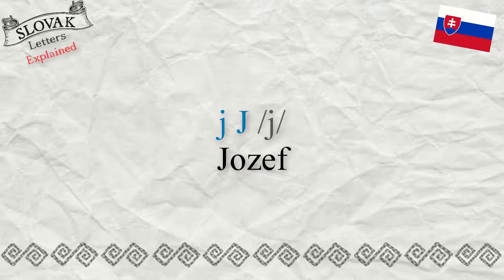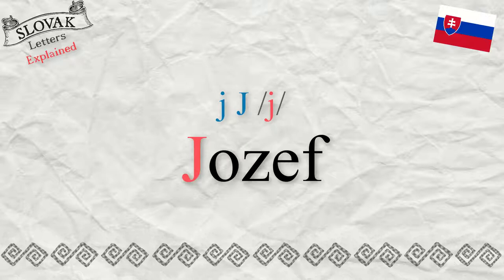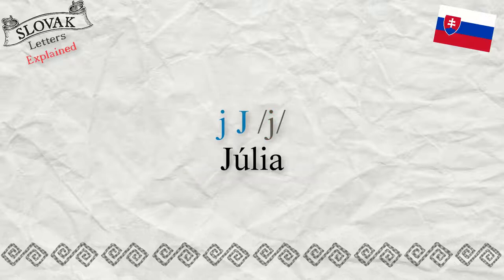The following examples are common Slovak names. Jozef — it is not 'Joseph'; the J sounds like Y, so it is 'Yozef.' Júlia — it is not 'Julia' with an English J; the J sounds like Y.